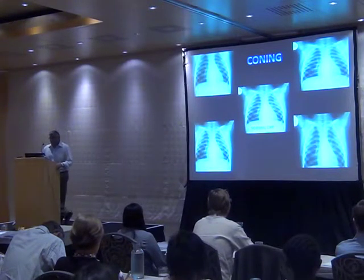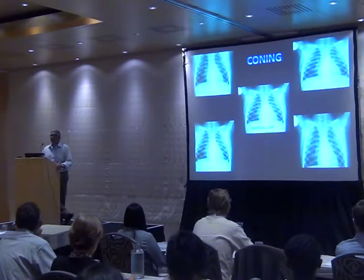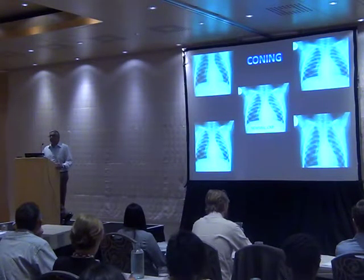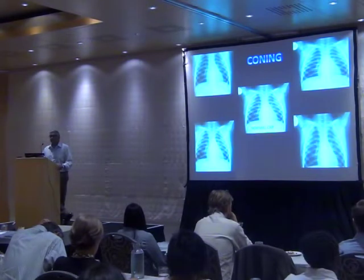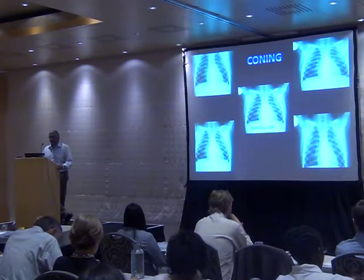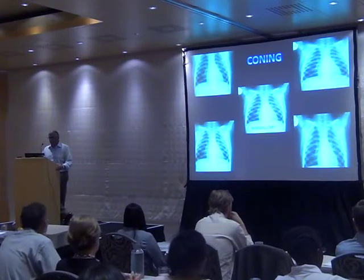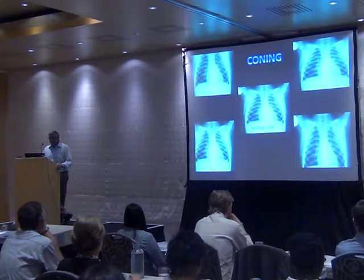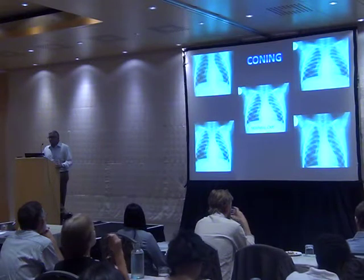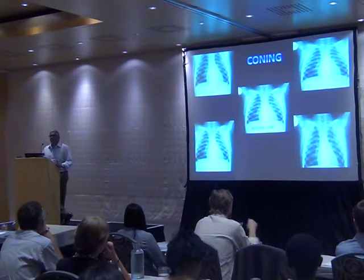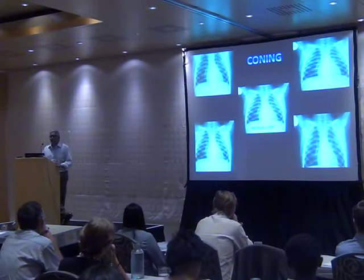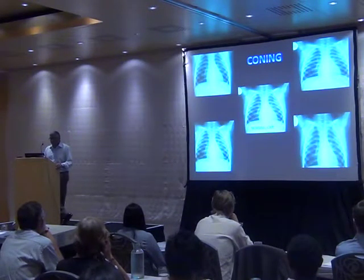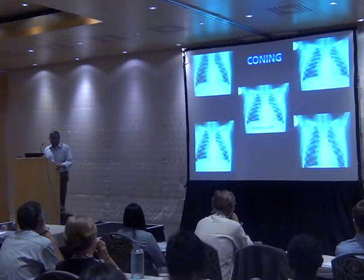Coning is essential to limit radiation. We try to minimize radiation exposure in children, who have rapidly developing tissues and whose cumulative dose over a lifespan places them at increased risk of malignant transformation. We try to limit the amount of exposure without cutting off essential anatomy. A correctly coned radiograph is one where the regions of interest are adequately represented.